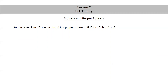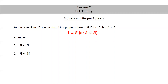For two sets A and B, we say that A is a proper subset of B if A is a subset of B, but A is not equal to B. We use the sideways U-shaped symbol without a line under it for a proper subset. Some authors use the subset symbol with a little slash mark through the line under the sideways U to really emphasize that we're not including the set itself. The set of natural numbers is a proper subset of the set of integers because it's a subset of the set of integers, but not equal to the set of integers. On the other hand, the set of natural numbers is not a proper subset of itself, although it is a subset of itself.